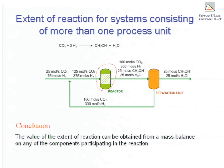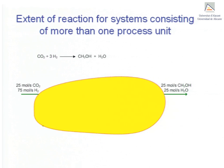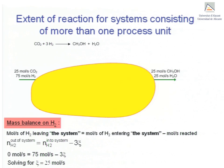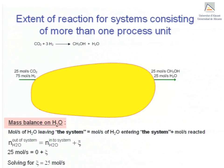We once more write a material balance on each component using the concept of extent of reaction, but this time taking as control volume the whole system, which should be understood as being equivalent to a single process unit. The material balance on carbon dioxide reads: moles per second leaving the system equals moles per second entering the system minus moles per second reacted, 1 times the extent of reaction Xi. Solving for Xi gives 25 moles per second — the exact same value obtained from the balance over only the reactor. Applying the same balance on hydrogen, methanol, and water each gives 25 moles per second for the extent of reaction.